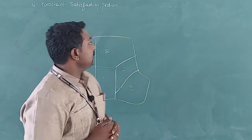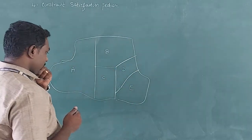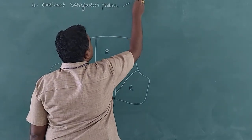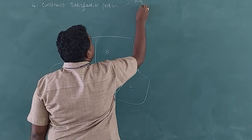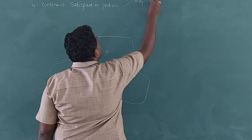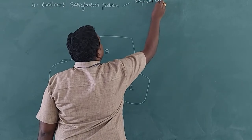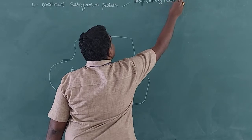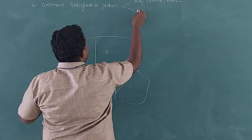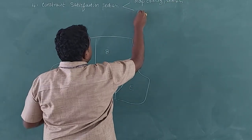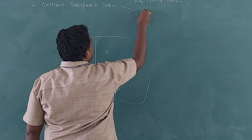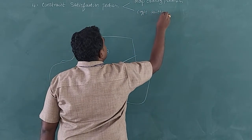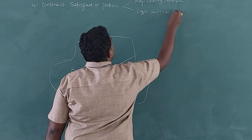This Constraint Satisfaction Problem can be explained with two examples. One is the Map Coloring Problem, and another example is the High Order Constraint, that is the Crypt Arithmetic Problem.